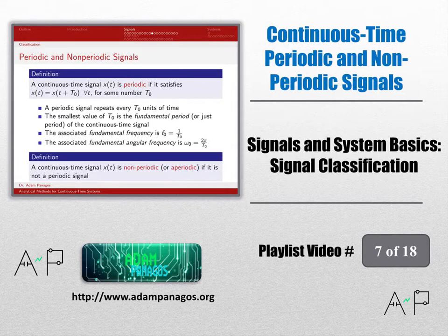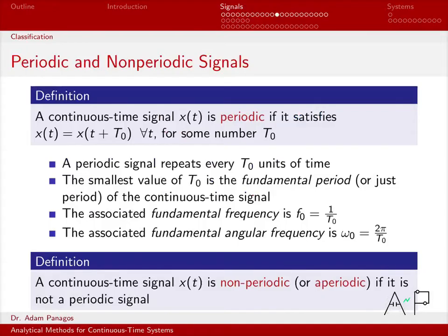The next signal property that we want to look at is whether a signal is periodic or non-periodic. So a periodic signal is simply a signal that repeats over and over. You look at it in the plot and you basically see a pattern, and that pattern repeats for all time. Mathematically, we say that there is some number T₀ such that my signal x(t) equals x at time t plus T₀ for all time.